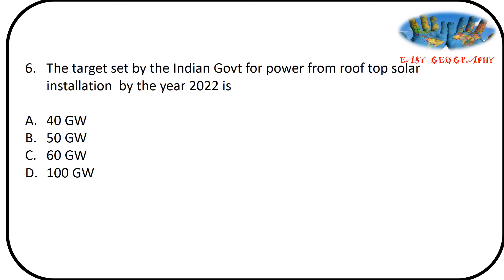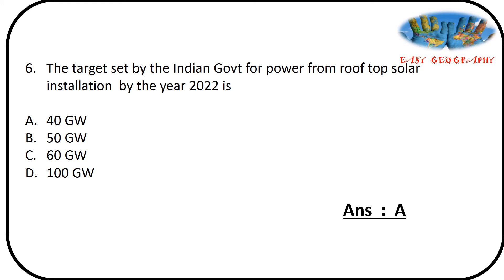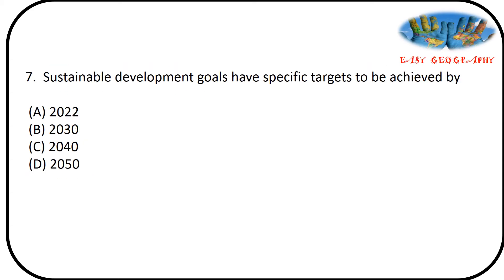Next question: the target set by the Indian government for power from rooftop solar installation by the year 2022. Options: 40 gigawatt, 50, 60, 100. Answer is option A — 40 gigawatt. The target for power from rooftop solar installation by the year 2022 is 40 gigawatt.